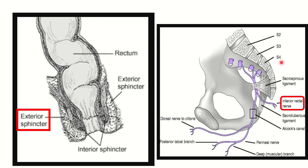The pudendal nerve also gives rise to other branches such as the perineal branch and the dorsal nerve of the clitoris or dorsal nerve of the penis. So the pudendal nerve is derived from three nerve roots — sacral 2, sacral 3, and sacral 4 — and gives rise to three branches: the inferior rectal nerve, the perineal nerve, and the dorsal nerve of the clitoris or penis.